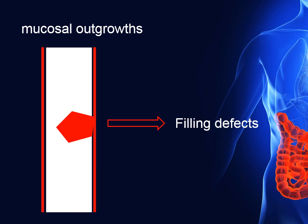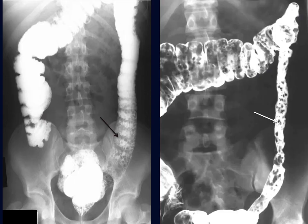The third pathology is polyposis. Polyposis is a mucosal outgrowth that prevents the contrast from totally opacifying the lumen, leaving a part not opacified by the contrast — a filling defect. This is a picture of polyposis showing total opacification of the lumen by the contrast apart from multiple small filling defects, shown as single contrast and double contrast.